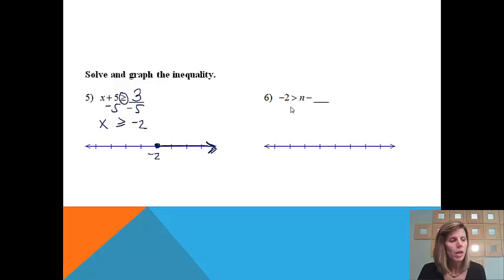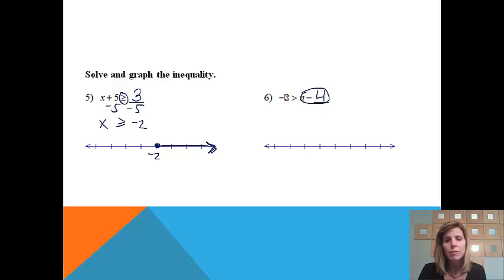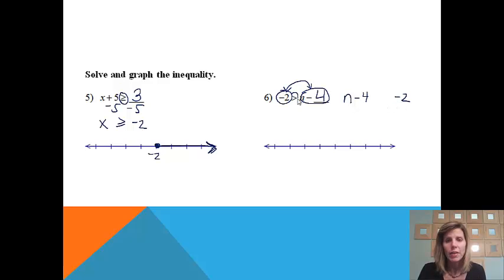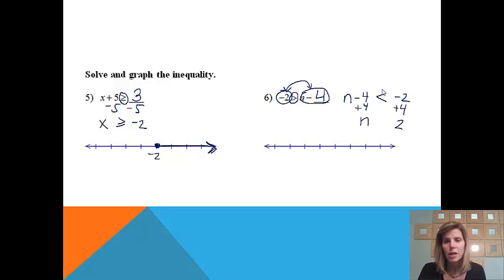This next one: negative 2 is less than n minus 4. Before we solve it, just like when we were graphing inequalities, we need to flip-flop the right and left sides. So n minus 4 goes on the left and negative 2 goes on the right, and we change the greater than sign to a less than sign. That step will save you from getting the wrong answer. Now we add 4 to both sides and get n is less than 2.